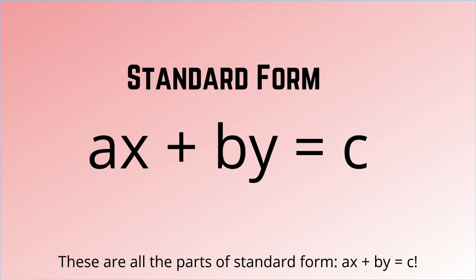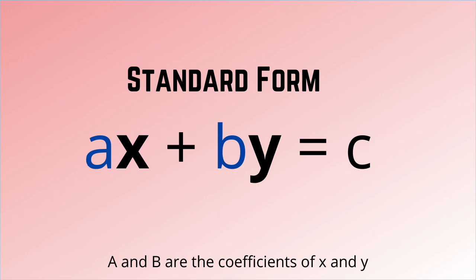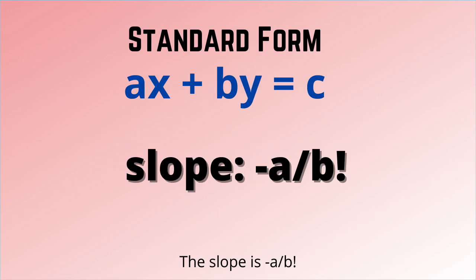These are all the parts of standard form: ax + by = c. A and b are the coefficients of x and y. The slope is -a/b.